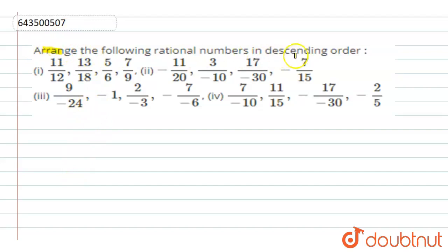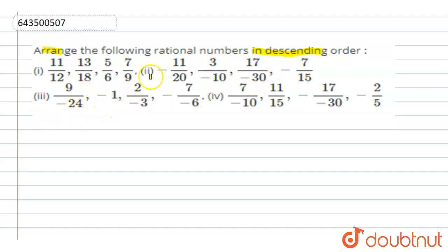Our question is to arrange the following rational numbers in descending order. Four sets of questions are given. The first one is 11/12, 13/18, 5/6, 7/9. The second one is -11/20, -3/10, -17/30, -7/15. The third one is 9/(-24), -1, 2/(-3), and -7/(-6). The fourth set includes 7/(-10), 11/15, -17/30, and 2/5.